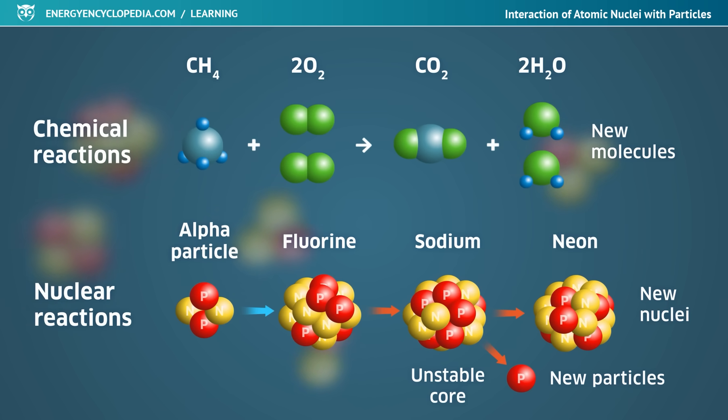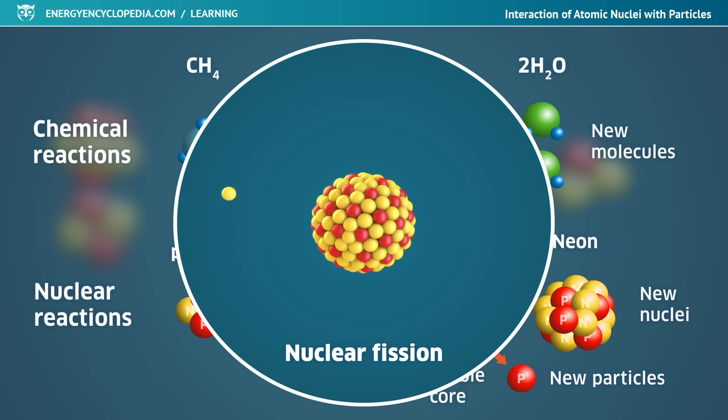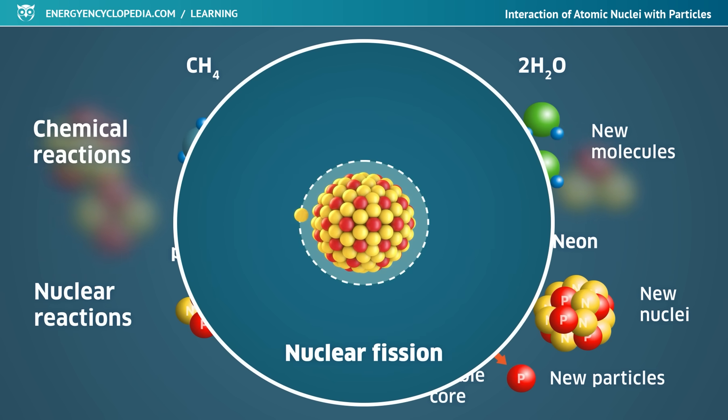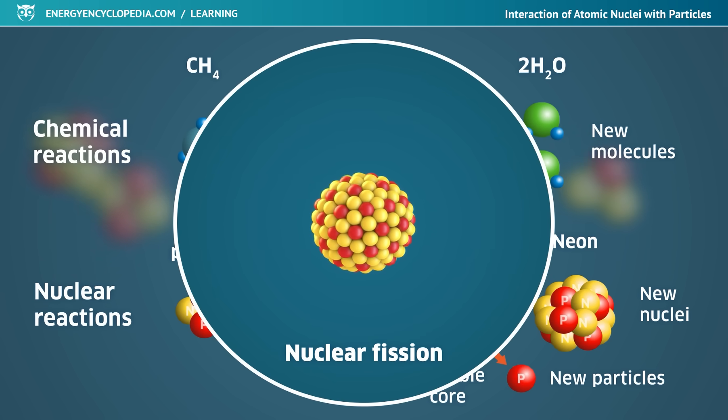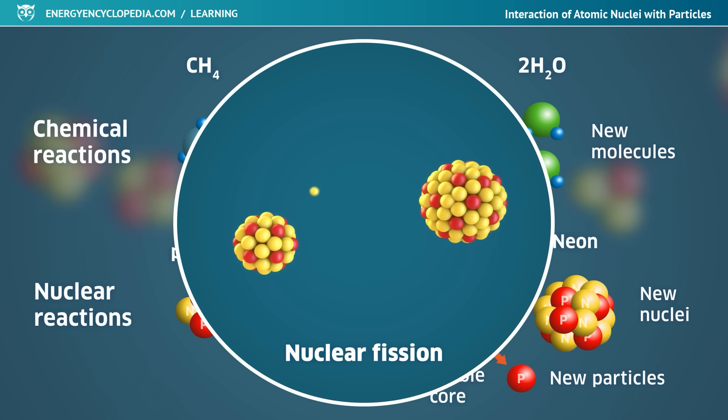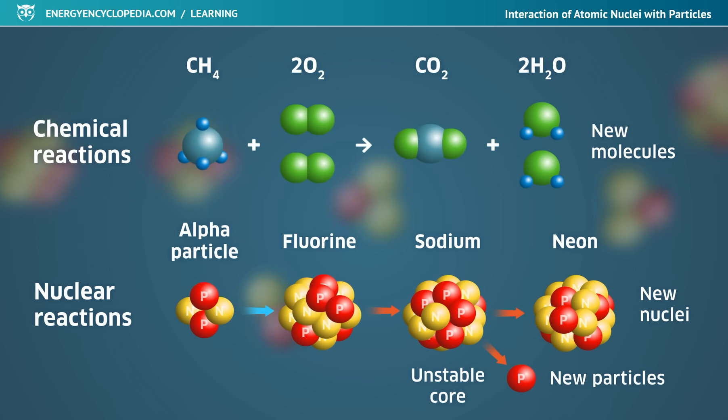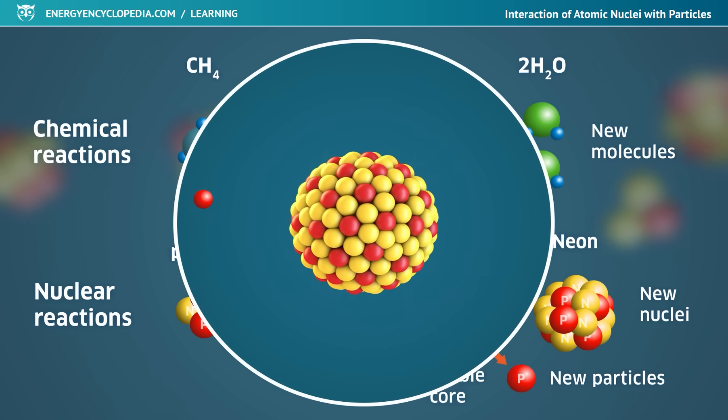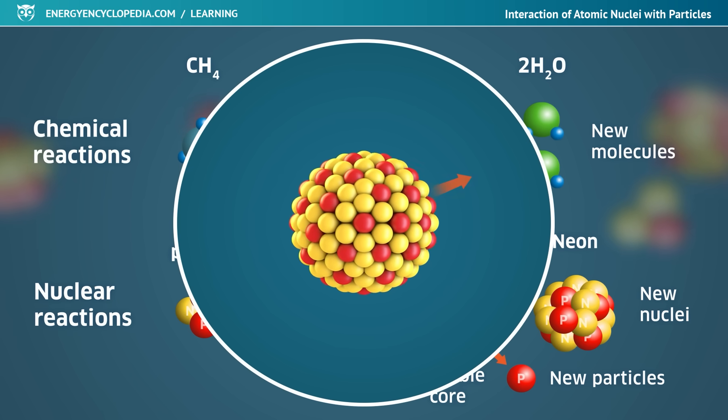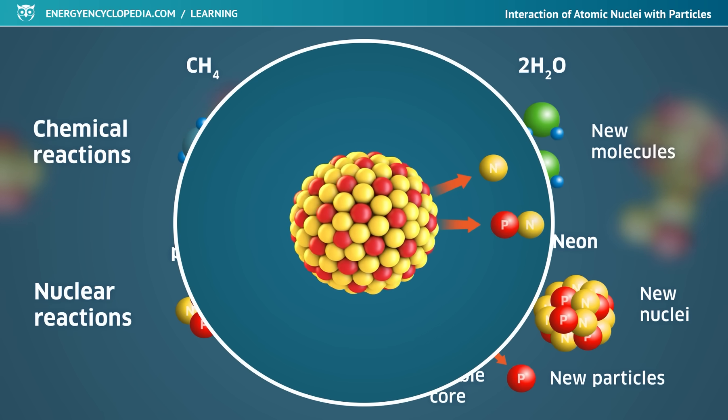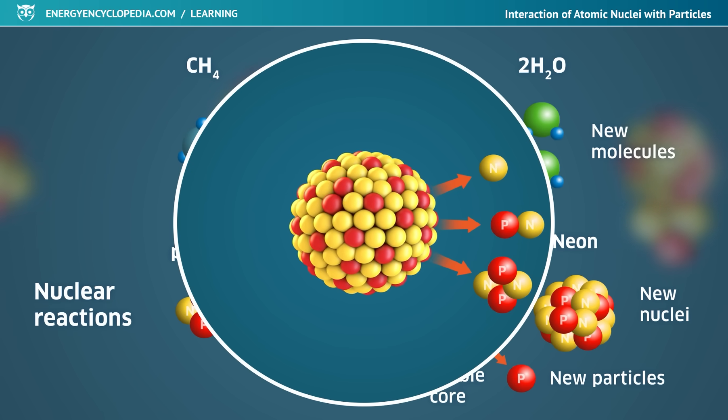In nuclear physics, nuclear reactions occur when a particle comes close enough to the nucleus to enter the region of the strong nuclear interaction. The result of the reaction is a change in the number and configuration of nucleons in the original nucleus and a change in energy ratios. A frequent accompanying phenomenon of nuclear reactions is the emission of other particles or different types of radiation.